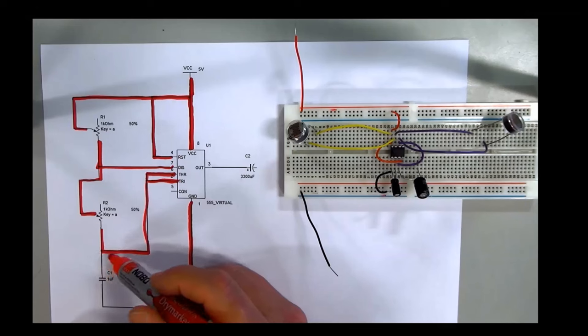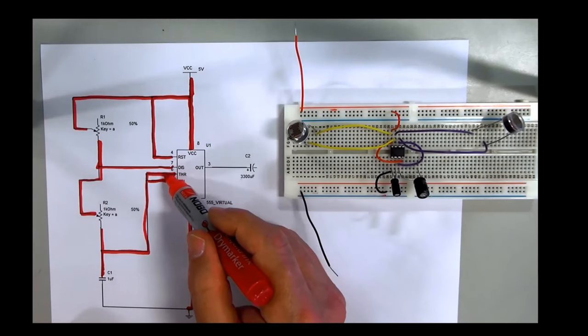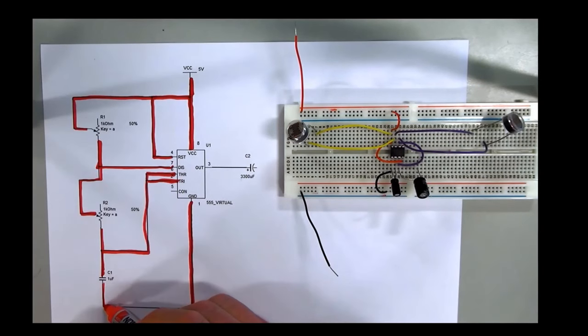Finally for this part of the schematic, we have the capacitor which joins from pin 2. It could be pin 6 as well, but in this case it's pin 2, and it goes down to ground.